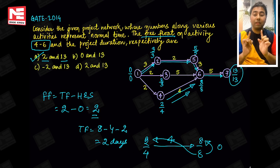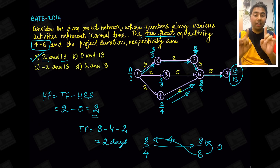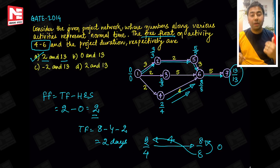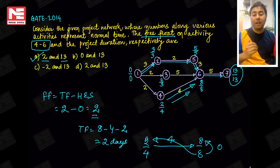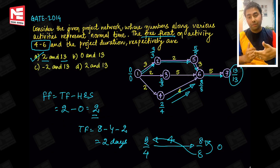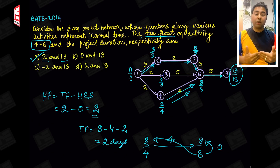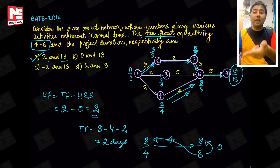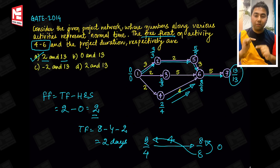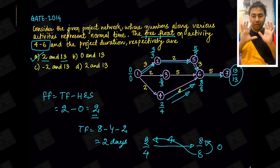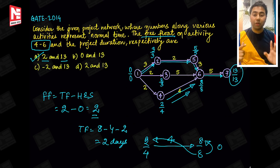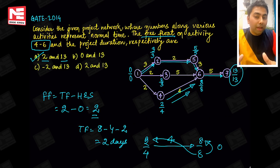Independent float होगा जब आपके पहले वाला activity अपने latest date पर काम खत्म कर रहा है — मतलब आप अपने latest date से काम शुरू कर रहे हैं — और सामने वाला activity अपने earliest date से काम शुरू कर रहा है। तब आप maximum squeeze हो चुके होते हैं। उसके बावजूद भी अगर आपके पास कुछ time है delay करने के लिए without affecting the project, then that will be independent float. Thank you very much.